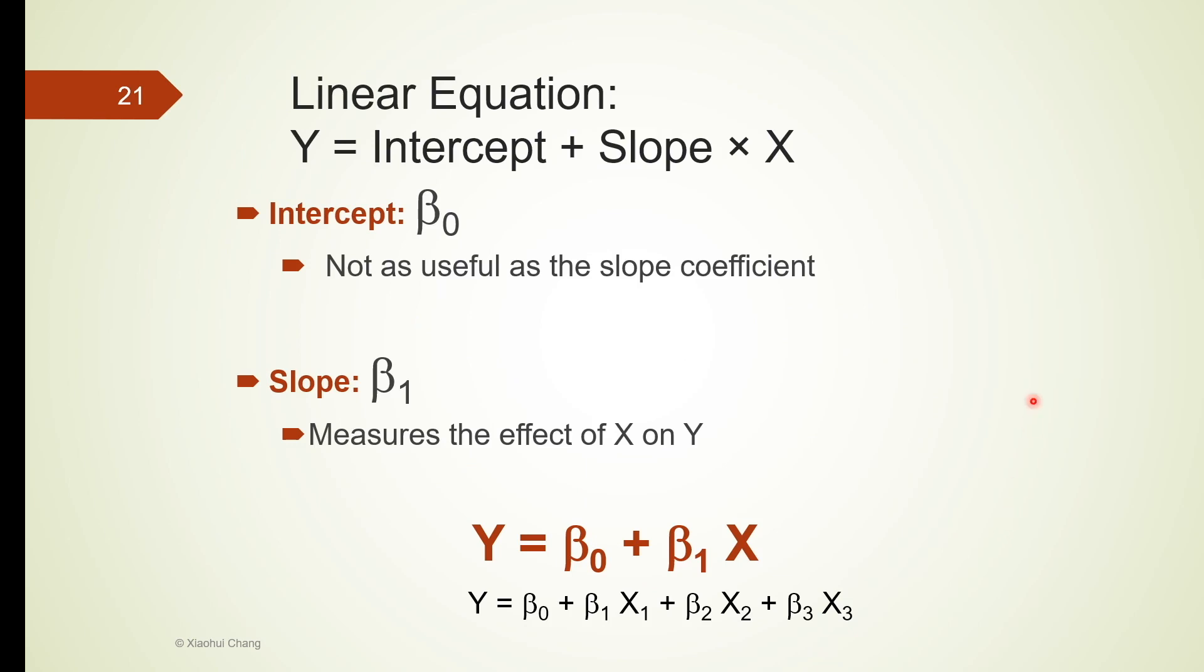Let's talk about a general form of linear equation using the intercept and slope. We usually denote the intercept as beta 0. If there's only one x, its corresponding slope coefficient is going to be beta 1. If there are 2 x in the equation, that's a multiple linear regression model, we will use x1 and x2 to represent them. And their corresponding slope coefficients are going to be beta 1 and beta 2 respectively.